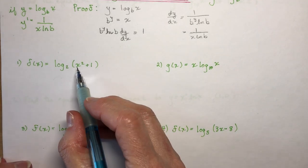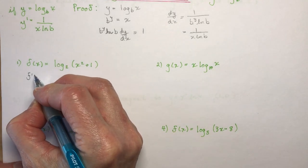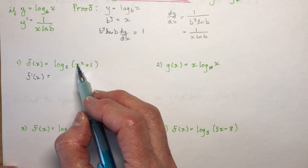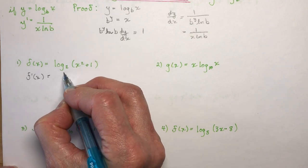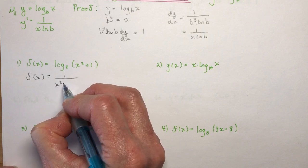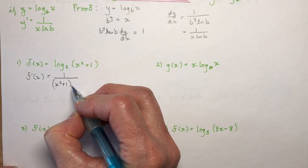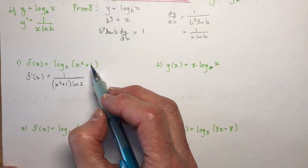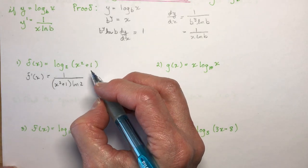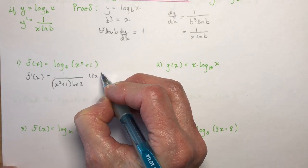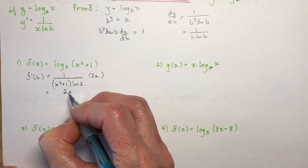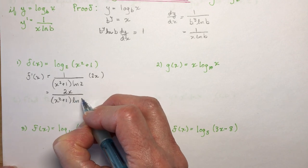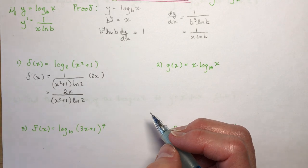If we have log base 2 of (x² + 1), then f prime of x is 1 over (x² + 1) in brackets, times ln 2. And because this is a composite function, I need to take the derivative of the inside as well. The derivative of x² + 1 is 2x. So the answer is 2x over (x² + 1)·ln 2. Don't forget to put the brackets on that.